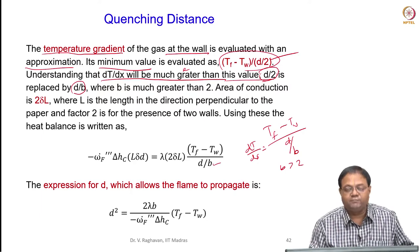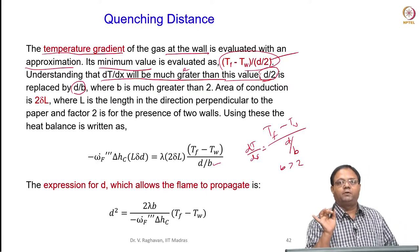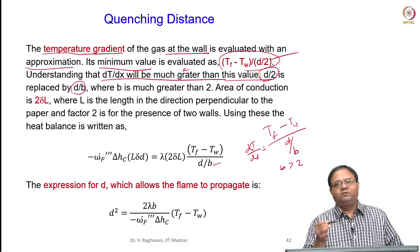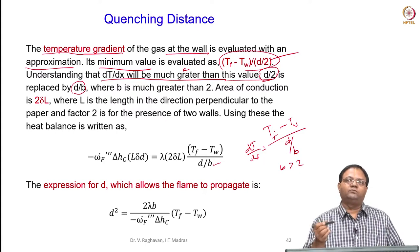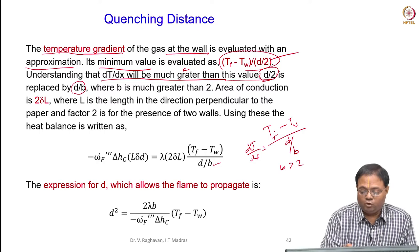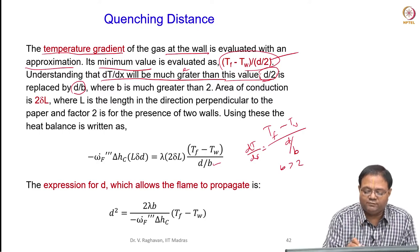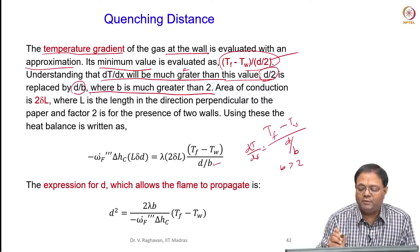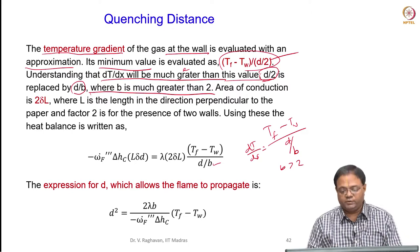That is why I am introducing another variable b, which is greater than 2, so that I get the gradient properly. Again, we need some validation for this — we have to take some measurements or something like that and validate this. We have to understand that b will be much greater than 2, say 3 or 4 or something like that.